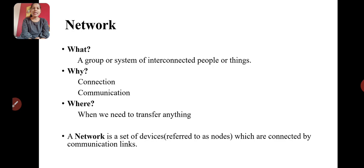Devices are connected by communication links. Communication links may be wired as well as wireless. In wired, you can have coaxial cable, fiber optic cable, or any type of cable. In wireless, you can have radio, satellite communication, or microwave. All these communication links we will study in detail in the third chapter on transmission media.